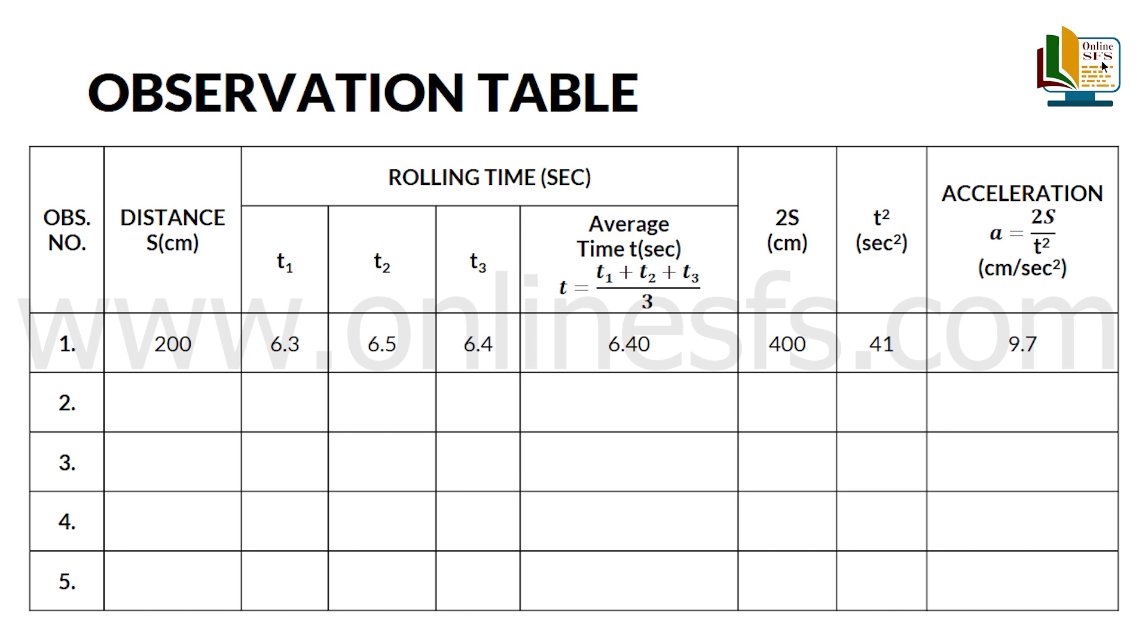To calculate average time we will add t1, t2 and t3 and divide by 3. So, 6.3 plus 6.5 plus 6.4 divided by 3 equals to 6.40. To calculate 2s we will multiply 200 by 2 to get 400 cm.